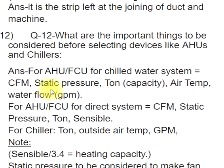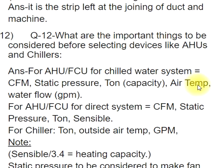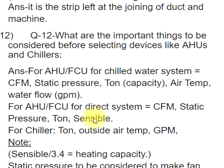Q12: What are the important things to be considered before selecting devices like AHUs and chillers? ANS: For AHU/FCU (chilled water system): CFM, static pressure, tonnage capacity, air temperature, water flow (GPM). For AHU/FCU (direct system): CFM, static pressure, tonnage, sensible. For chiller: tonnage, outside air temperature, GPM.